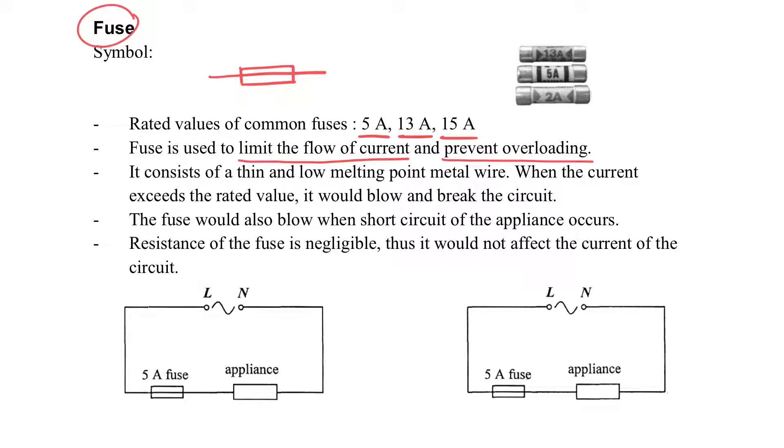It's used to limit the flow of current and prevent overloading. There is a metal wire inside which is thin and also has a low melting point. That means it can be broken easily, it can blow easily. When there is a short circuit, then the current will be very high. When the current is higher than the rated value of the fuse, then it will be broken.